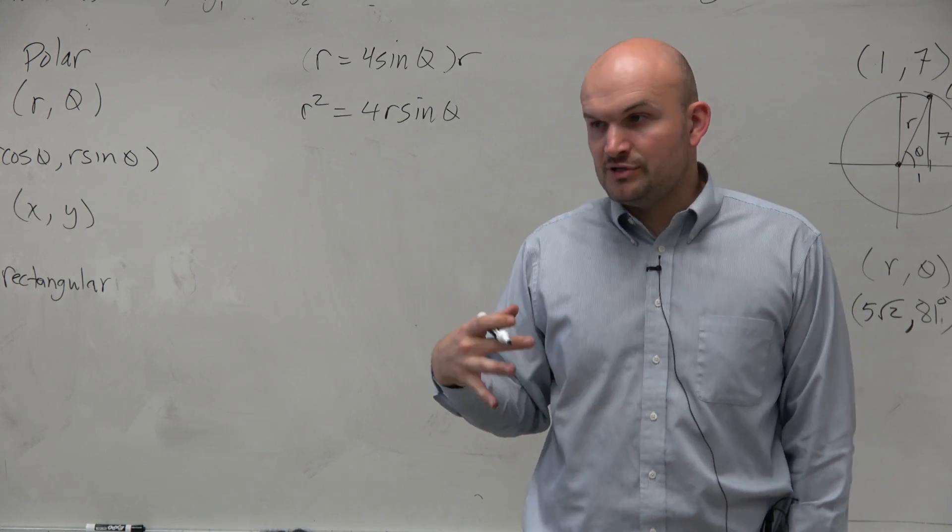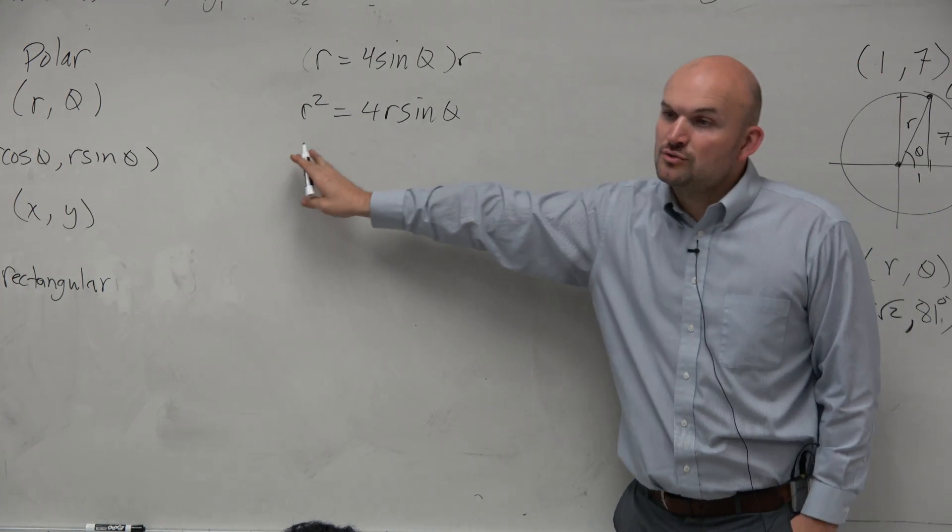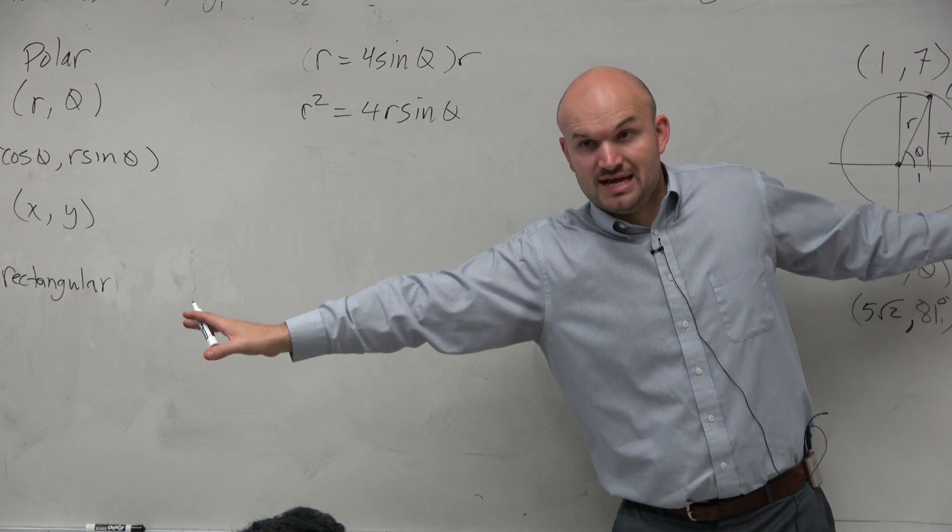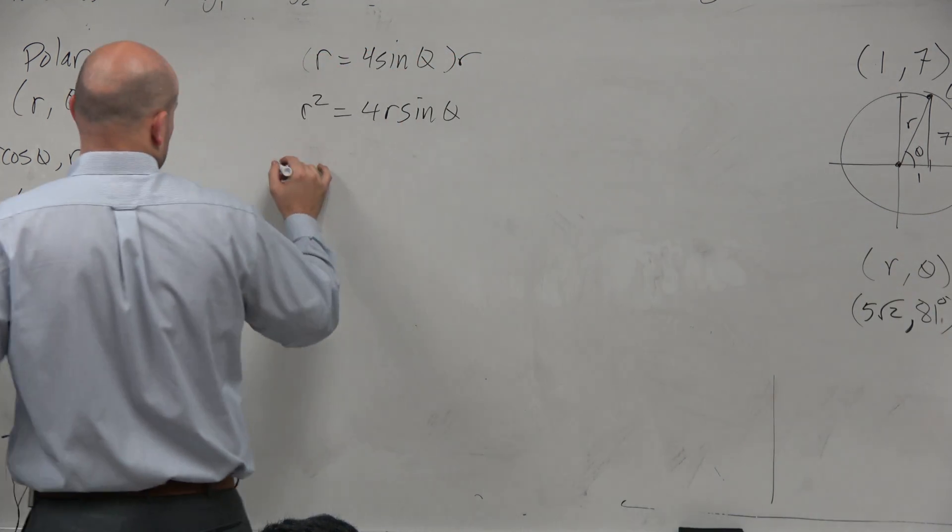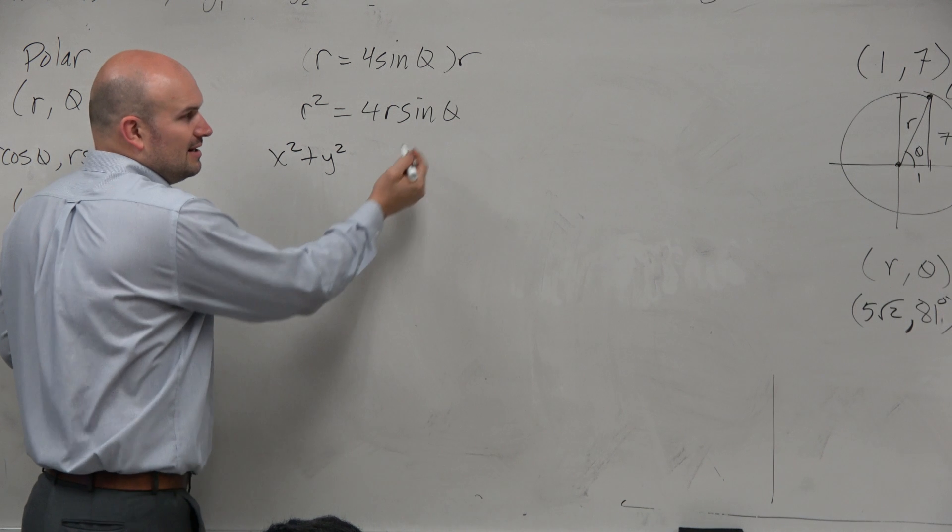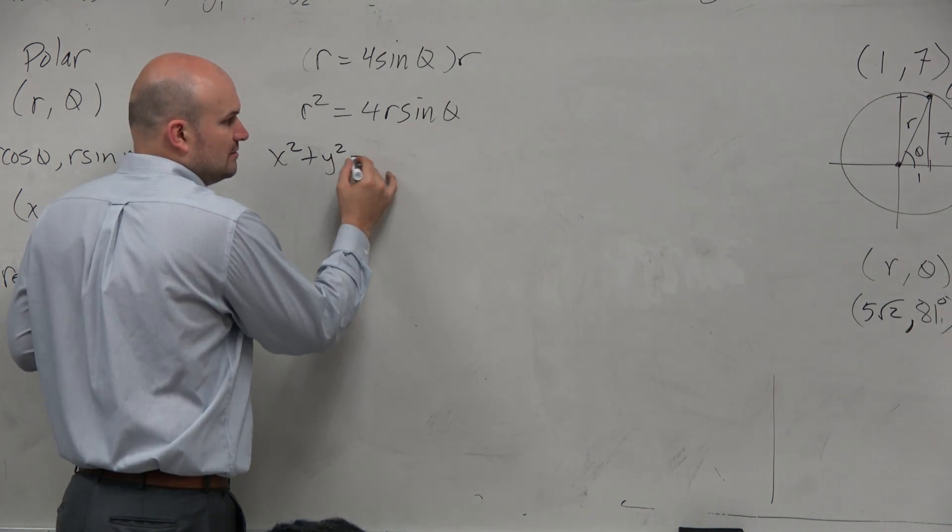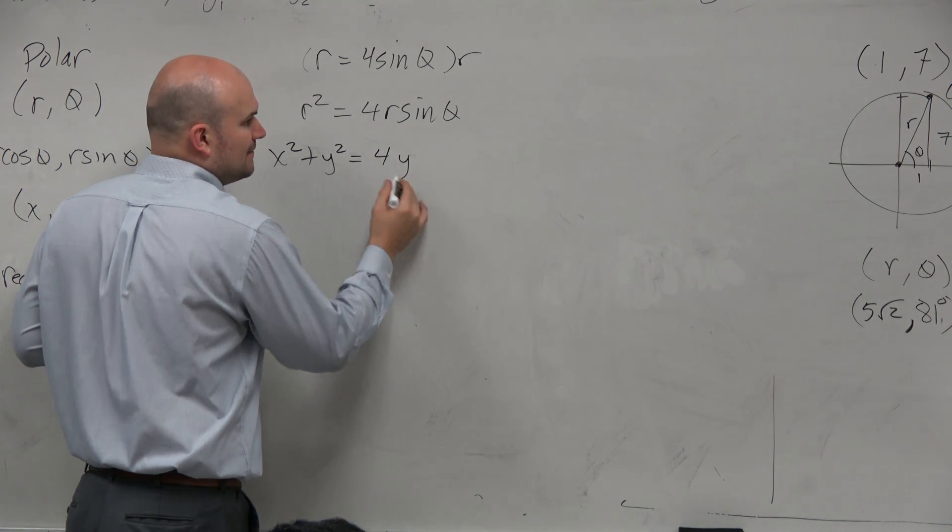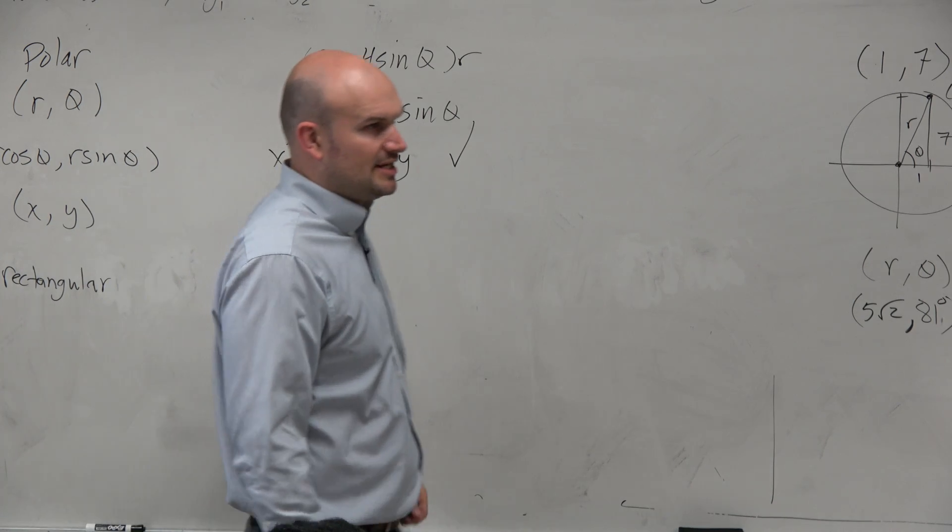But now what I'm doing is I've obtained r squared, which we know is equal to x squared plus y squared. And then r sine of theta we talked about is the same thing as y. Now, technically that is in rectangular form.